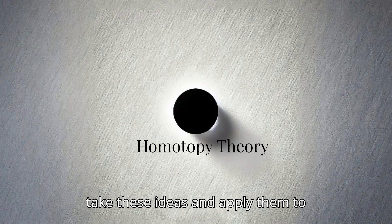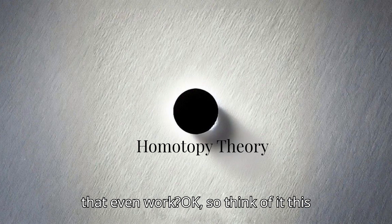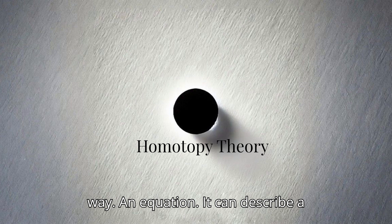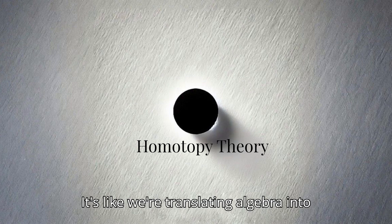And it doesn't stop there. We can take these ideas and apply them to something called algebraic geometry, which deals with geometric objects that are defined by equations. Hold on, we're going from Play-Doh shapes to equations now. How does that even work? Okay, so think of it this way. An equation can describe a curve, a surface, or even something in higher dimensions. Okay, I'm trying to picture it. Homotopy theory lets us analyze the shape of those objects, even if we can't actually see them. So we're using these ideas of deformation and looping to explore the geometry hidden within equations. Yes. It's like we're translating algebra into a language of shapes.